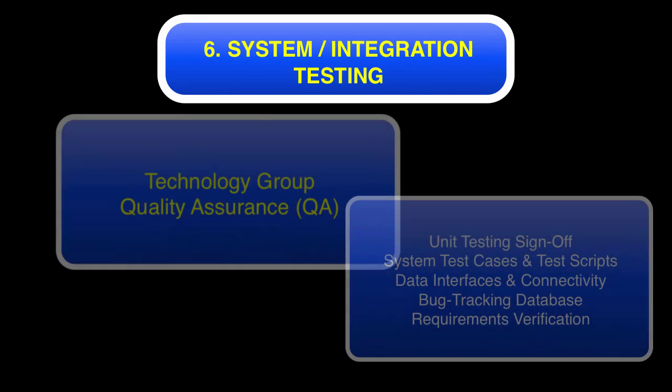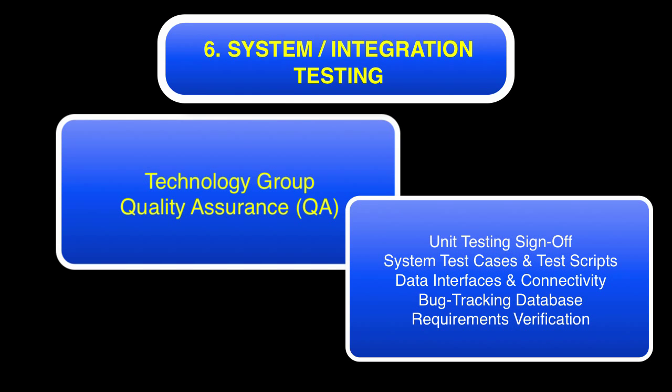That leads into the system or integration testing section. The QA team will complete and sign off on unit testing before integrated testing starts. They're also going to create a full integration test plan, which they should have started during unit testing. They'll make sure that all data interfaces and connectivity are set up, and that all the systems are speaking to each other properly. All bugs get entered into the bug tracking database. And finally, requirements verification — by the end of integration testing, the QA team has to verify that every requirement is working properly. That's really critical.